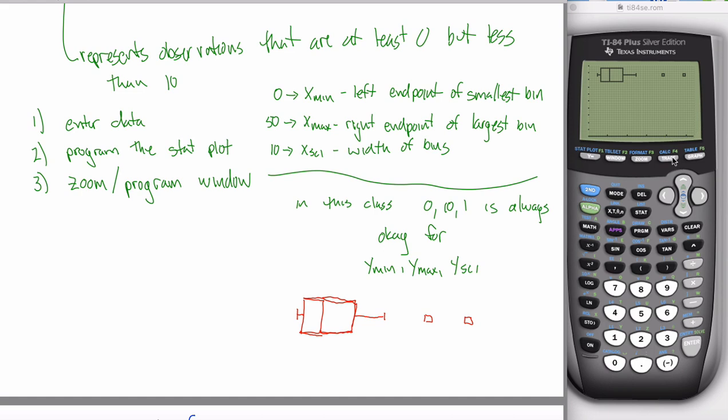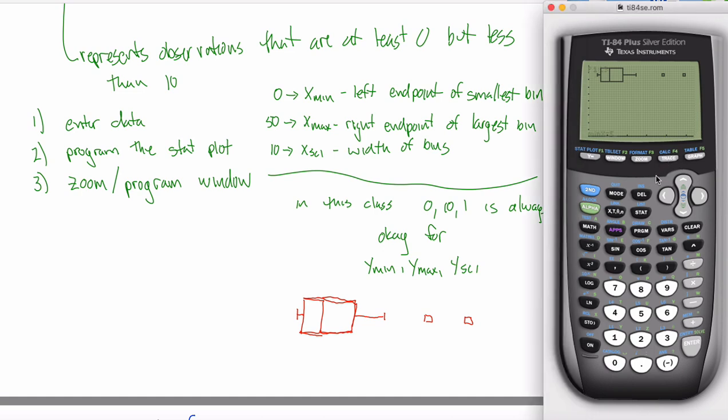And like we did before, you can get those out of the trace function. This smallest point here, it turns out it represents my smallest observation, kind of. I'll talk more on that in just a minute. And this is supposed to be at five. And then if I scroll to the right, it looks like the left edge of the box here is now highlighted.